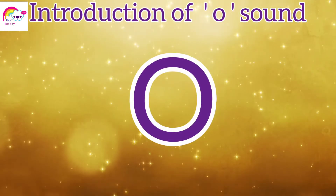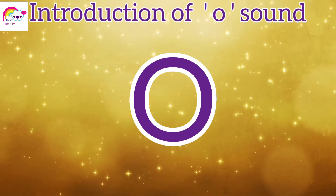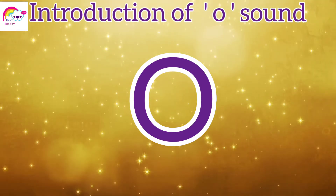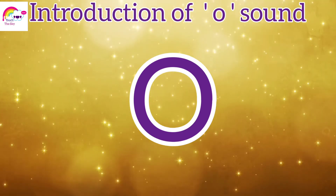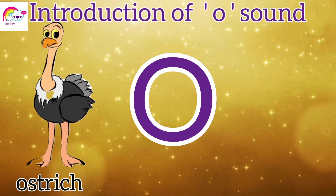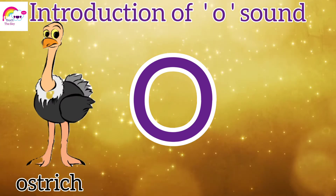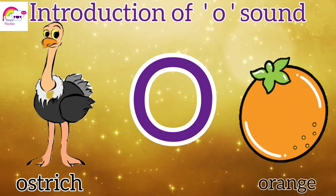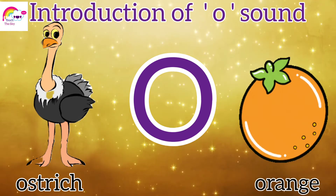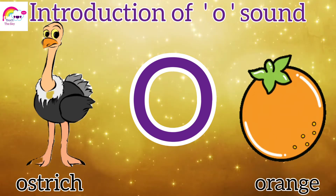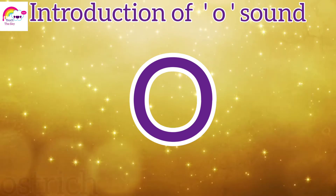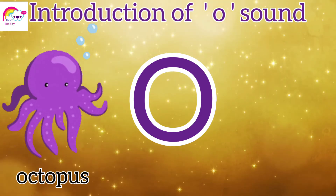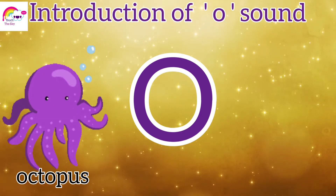Now let's move on to learn the vocabularies from A sound. An ostrich. An orange. An octopus.